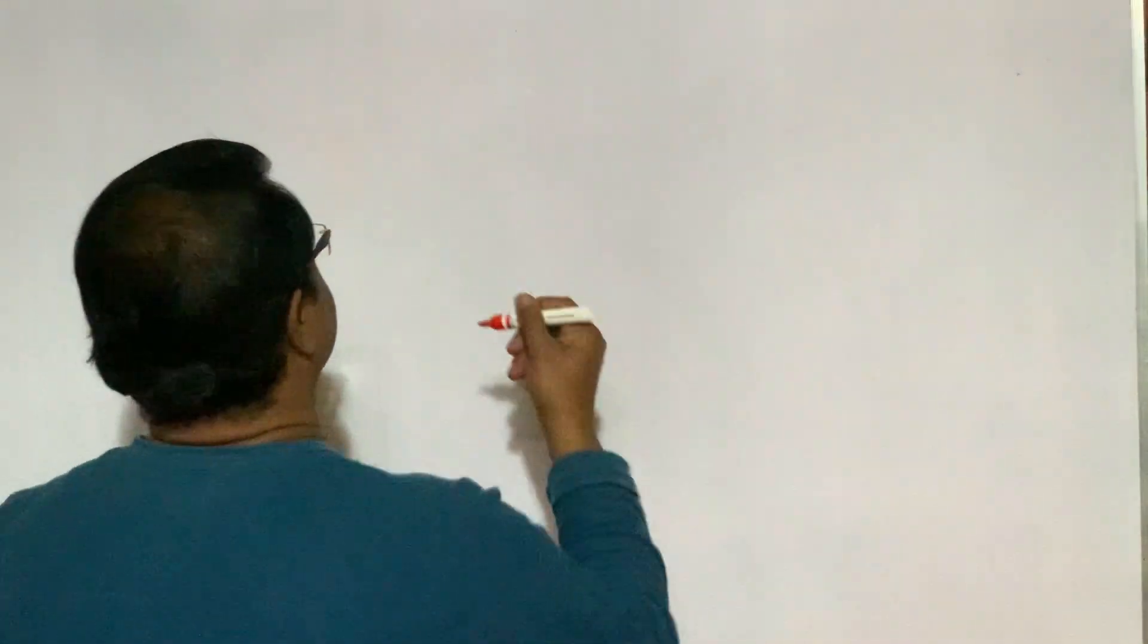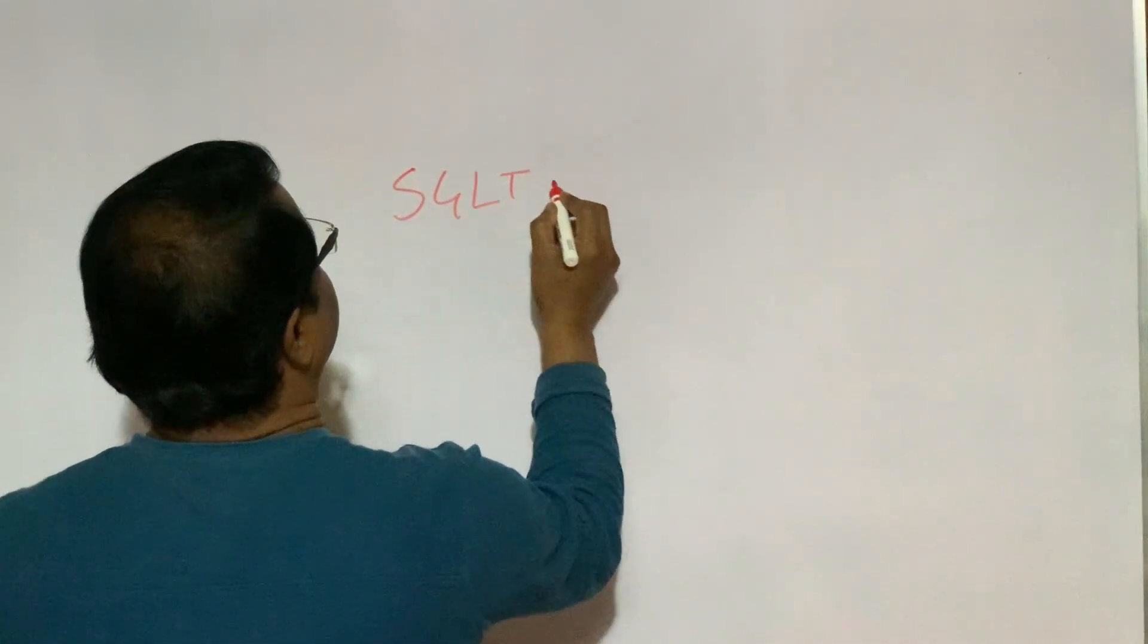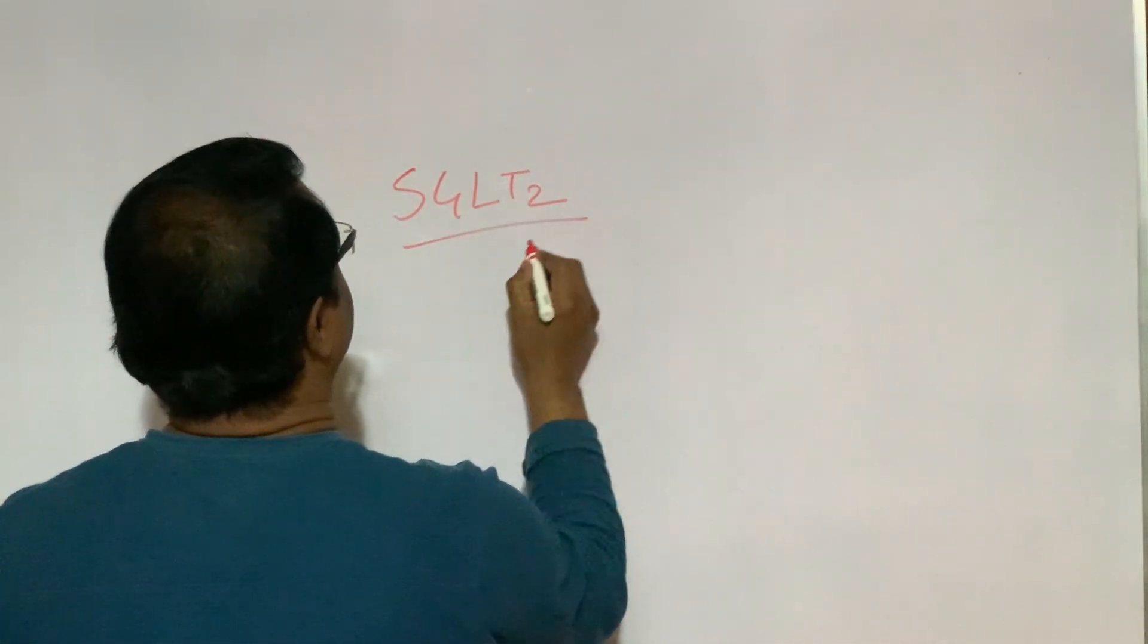Hello friends, our today's topic is SGLT2 inhibitors. We have 12 different groups of oral anti-diabetic drugs. SGLT2 inhibitor is the latest addition in this group.